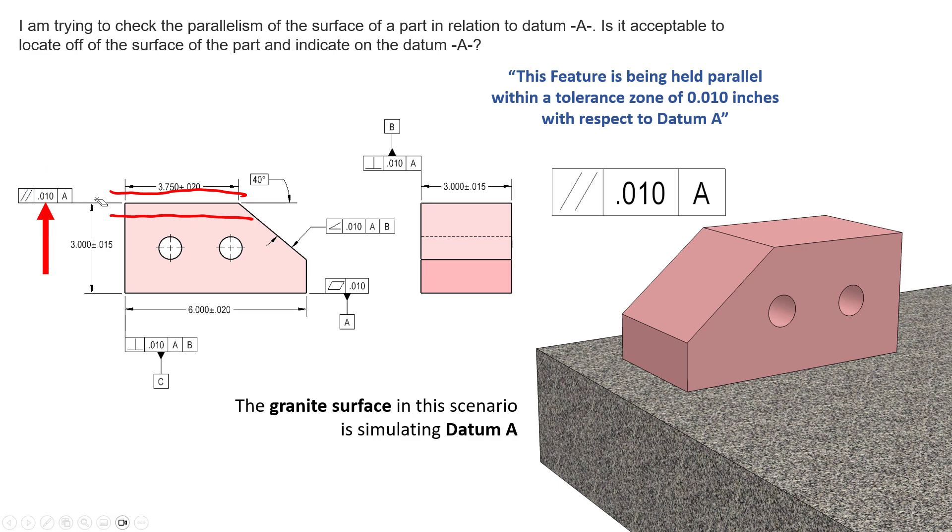But the added benefit of controlling parallelism of a surface is we also get to control the flatness or form error of that surface. So the surface can look something like this or it can look something like this. There's some level of form and orientation that's happening on this surface simultaneously.